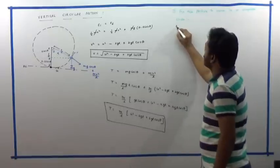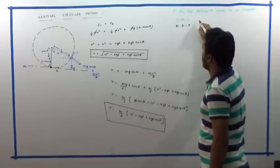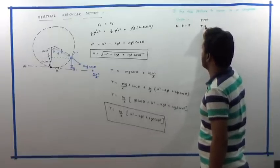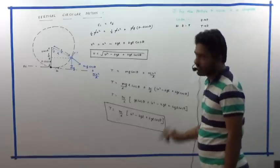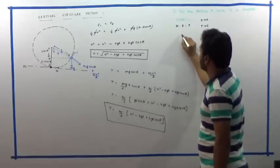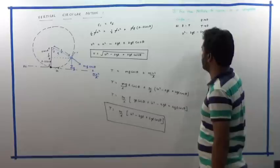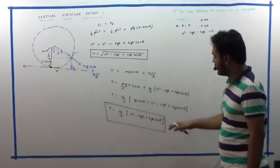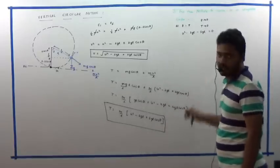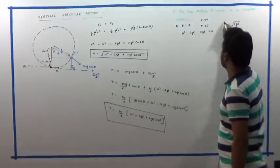At θ = π, velocity cannot be zero, but tension just approaches zero. Setting T = 0 and θ = 180° in the tension equation: u² − 2gL − 3gL = 0, which gives u = √(5gL). Providing this velocity ensures the particle completes a full vertical circular path.